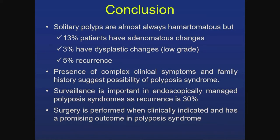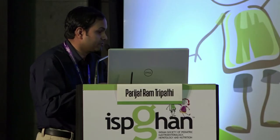In conclusion, solitary polyps are almost always hamartomatous, but 13% have adenomatous changes, 3% have dysplastic changes, and 5% have recurrence. When complex clinical symptoms and family history are present, polyposis syndrome should be suspected. Surveillance is important in endoscopically managed polyposis syndrome patients as recurrence is as high as 30%, and surgery when clinically indicated has a promising outcome.